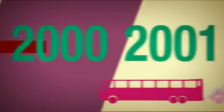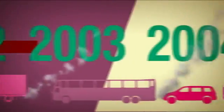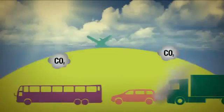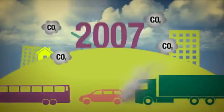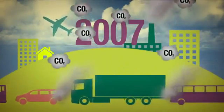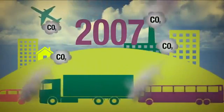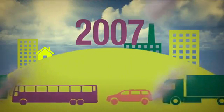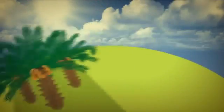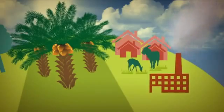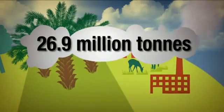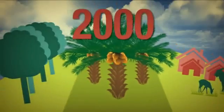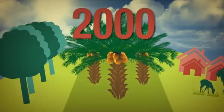Over the years, oil palm plantations were still removing more carbon than they emitted until the year 2007. In the year 2007, there was an increased use of fossil fuel in the energy and transport sectors. LULUCF and agriculture emitted only 26.9 million tons of carbon, declining substantially from the year 2000.